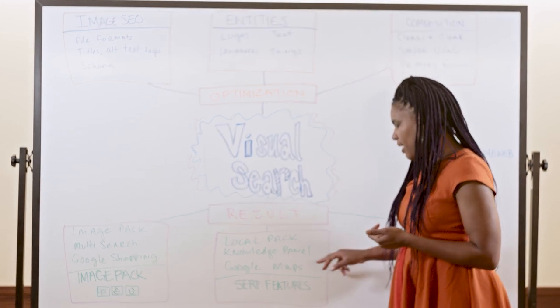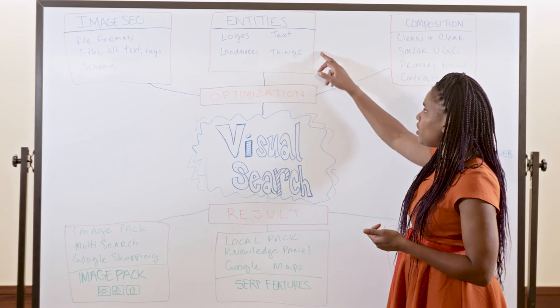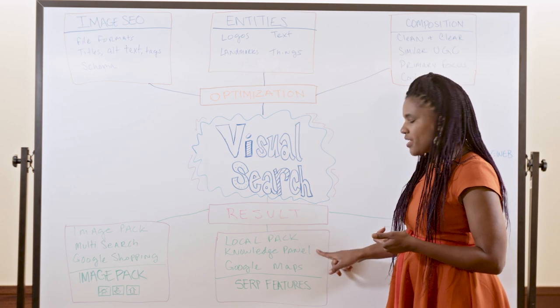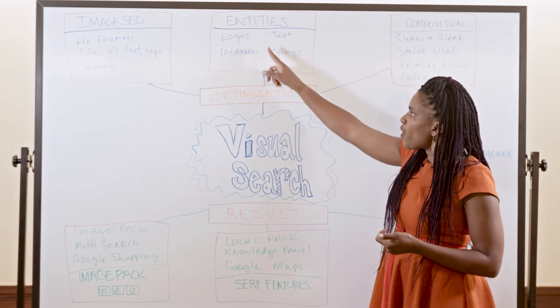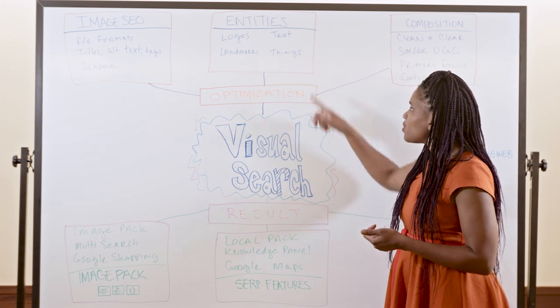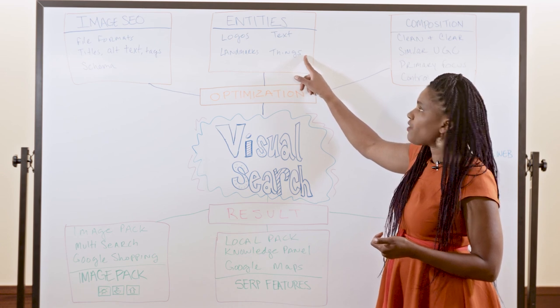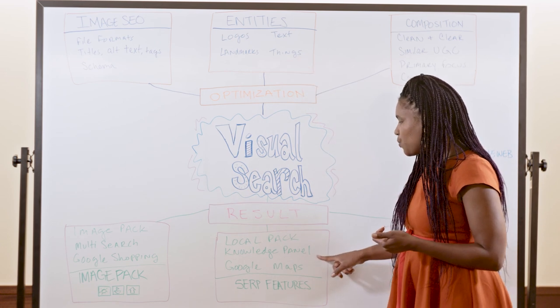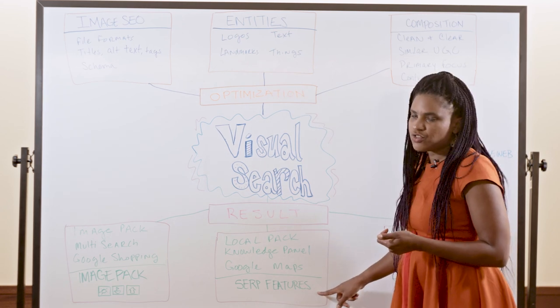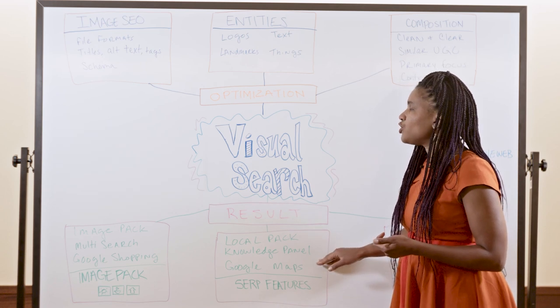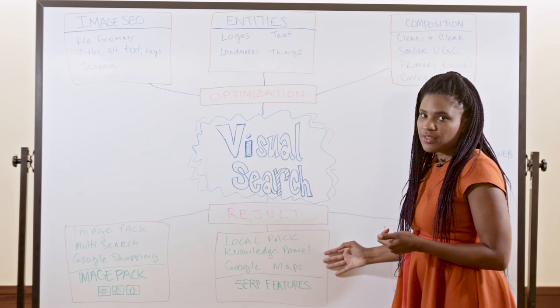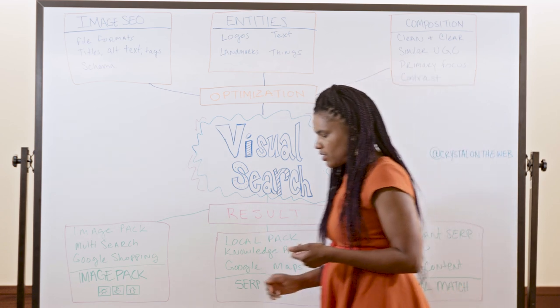So local pack is something that might come up. Also knowledge panels. So particularly with the entities, the entities may very well be attached to a specific knowledge panel. So for instance, logos for businesses or landmarks will have a knowledge panel. And also certain things, like if you were to think about something like Lego, that may very well have a knowledge panel as well. And landmarks, again, could very well be showing in Google Maps. So think about the kinds of SERP features that you might show there. And that means that you could also, while you're optimizing this, as part of your optimization for visual search, you might think about the optimizations that you make for these types of SERP results as well.